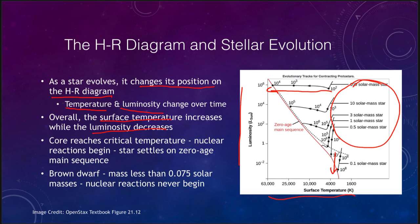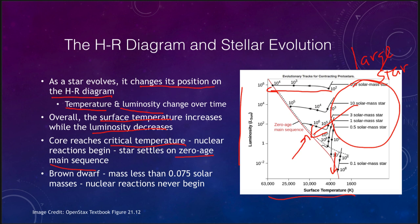The luminosity decreases because, in a sense, the star is becoming smaller — large stars are up in the upper right, and as a star works its way down, it becomes smaller. Eventually, when the core reaches the critical temperature of just over 10 million degrees, nuclear fusion begins, and the star settles on what we call the zero-age main sequence. It will then slowly change over its main sequence lifetime — millions of years for very massive stars, billions of years for a star like our sun, and potentially a trillion years for a very low-mass star.